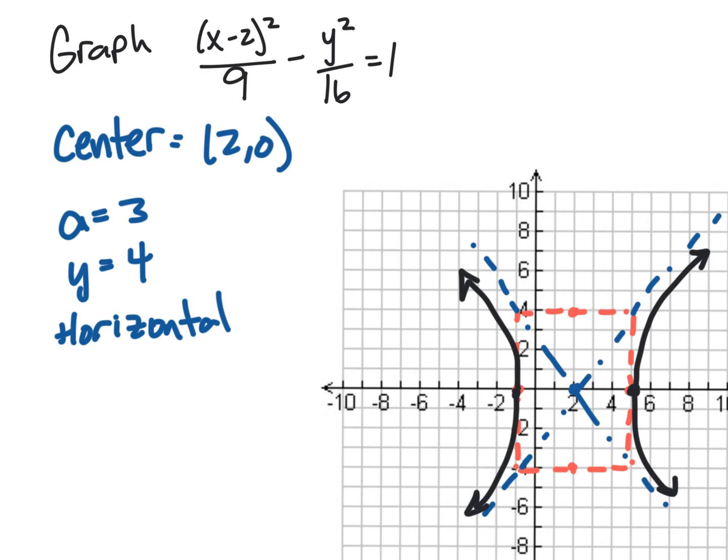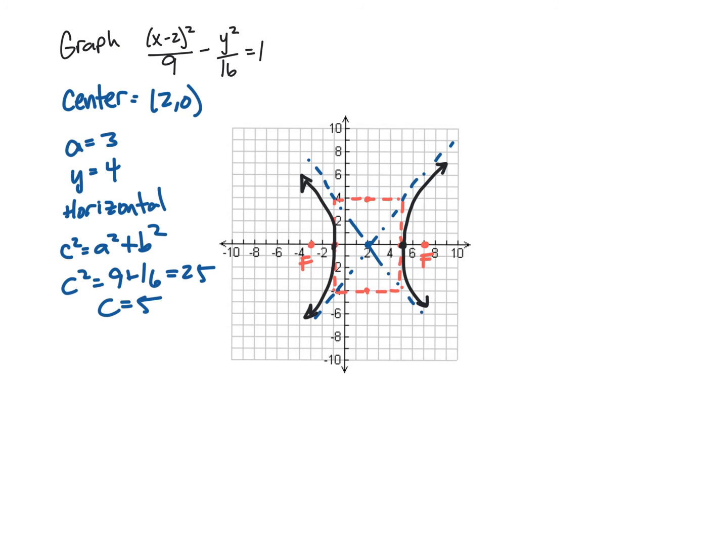All right. Lastly, I need to find the focus. So c² = a² + b². c² = 9 + 16, which is 25, giving me a c of 5. So the foci will be 5 away from the center. So here it's (7,0), and at (-3,0). These are my two focus points. Okay. Now the eccentricity, e will be c/a, so 5/3, which is 1.6 repeating.